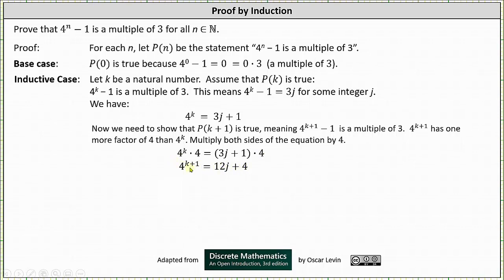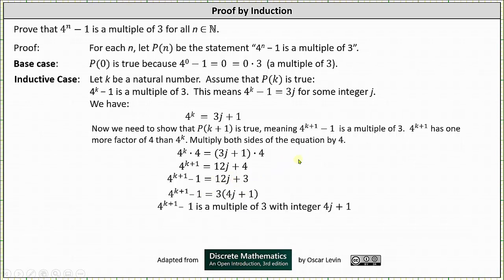We need to write the left side in the form of four to the power of k plus one minus one, so we subtract one from both sides. This gives us four to the power of k plus one minus one equals 12j plus three. Notice the right side has a common factor of three; we can write it as three times the quantity four j plus one. Therefore, four to the power of k plus one minus one is a multiple of three, with integer four j plus one.